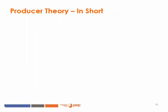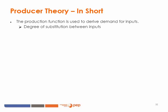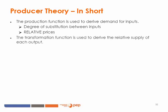In short, what have we seen? The production function is used to derive the demand for inputs. The degree of substitution between inputs is decisive in the input-demand behavior, and only the relative prices of factors matter. In parallel, the transformation function is used to derive the relative supply of each output, and the degree of transformation is critical in the supply behavior of the producer — here too, only relative prices matter. What we have seen during this lesson is a summary of what is presented in the documents attached. I invite participants to read the documents carefully and to do the suggested exercises, as these will be very helpful for the development of skills required to be a good CGE modeler.